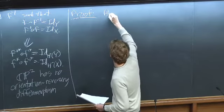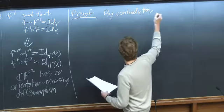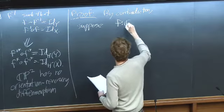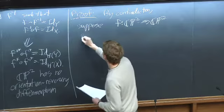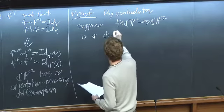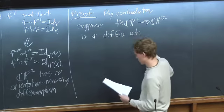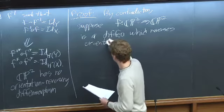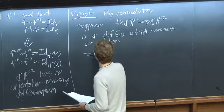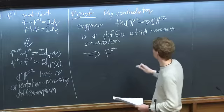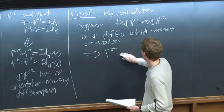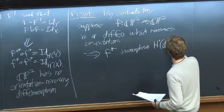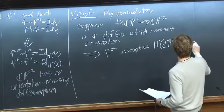By contradiction, suppose F maps CP² to CP² is a diffeomorphism which reverses orientation. This implies that F-star, the induced map on the cohomology rings, is going to be an isomorphism of the cohomology ring.